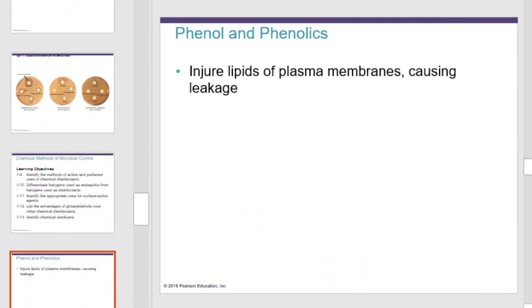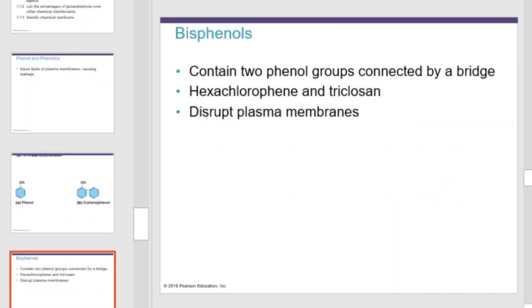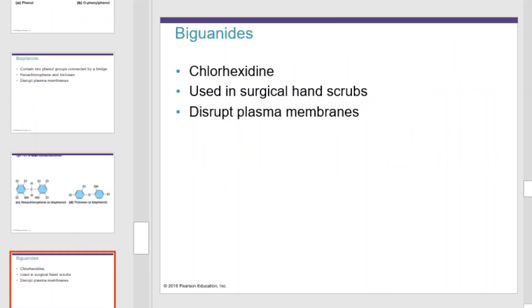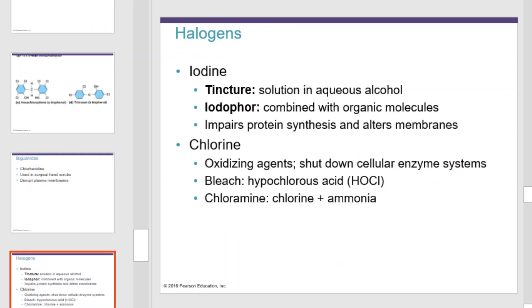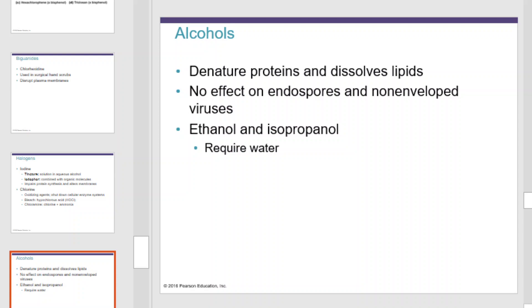Different types of chemical disinfectants include: phenols and phenolics, which injure lipids of plasma membranes causing leakage; bisphenols, which contain two phenyl groups connected by a bridge — hexachlorophene and triclosan disrupt plasma membranes; biguanides like chlorhexidine, used in surgical hand scrubs, also disrupt plasma membranes; halogens like iodine and chlorine, which impair protein synthesis and alter membranes; and alcohols, which denature proteins and dissolve lipids but have no effect on endospores and non-enveloped viruses.